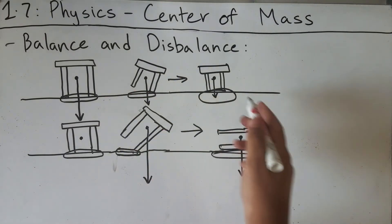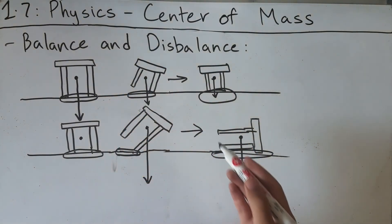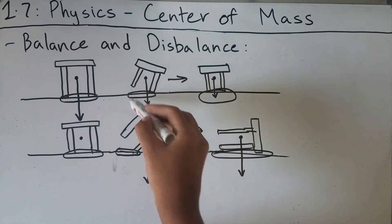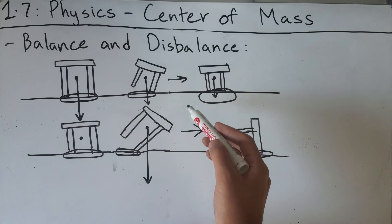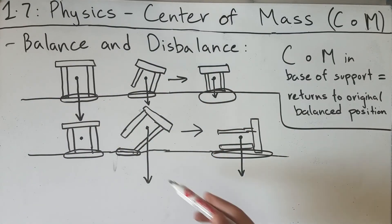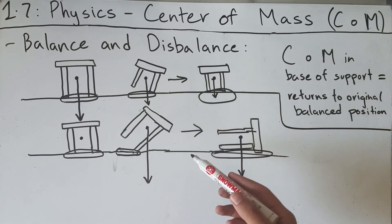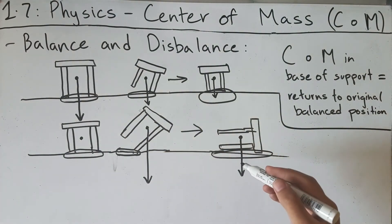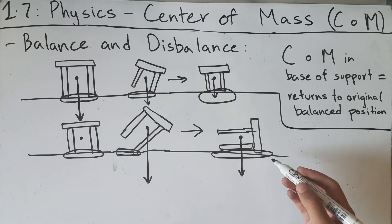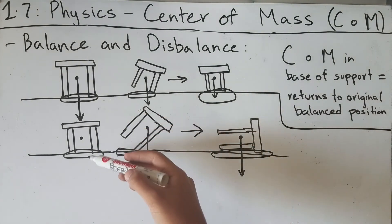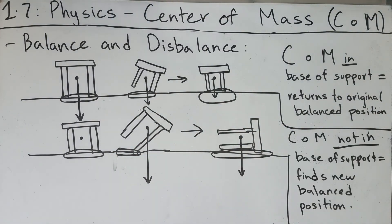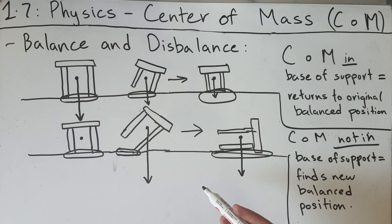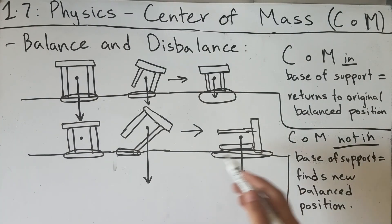So to summarize: if you displace an object, it will only stabilize if the force caused by its weight — or the center of mass — remains within the base of support. In the first scenario, the center of mass stayed within the base of support, so the object returned to its original equilibrium. In the second scenario, the displacement was large enough that the center of gravity moved outside the base of support, causing the object to reorient itself into a new position where it regains equilibrium, though it cannot return to its original orientation. The object will always try to find a new balanced position so that the center of gravity passes through the base of support.